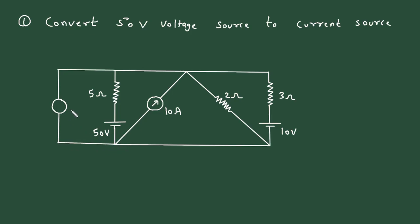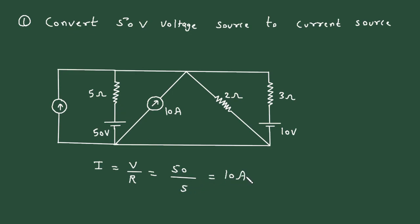The direction of this current source will be according to the polarity of the voltage source. Here the positive terminal is on the upper side and negative is on the lower side, so the current source direction will be upward. According to Ohm's law, I = V/R. The voltage is 50V and resistance is 5Ω, so the current source value is 10 amperes.